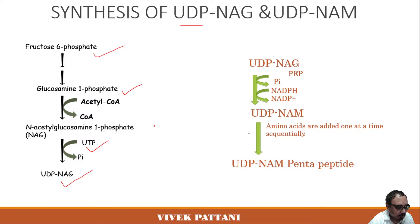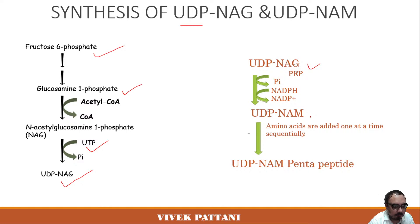This is a short overview of the formation of UDP-NAG, which is uridyl diphosphate N-acetylglucosamine. Moving forward, from UDP-NAG in the presence of NADPH and PEP (phosphoenolpyruvate), UDP-NAM is formed — that is, uridyl diphosphate N-acetylmuramic acid.